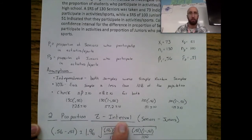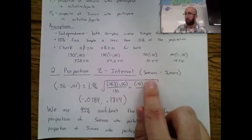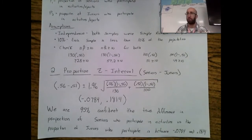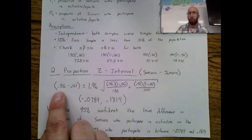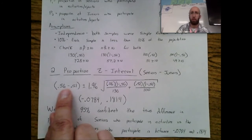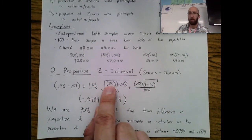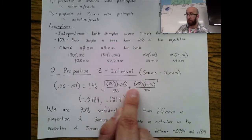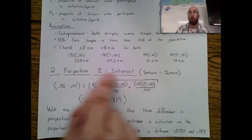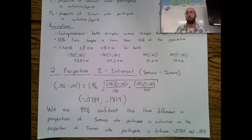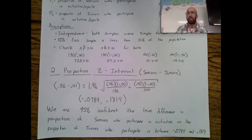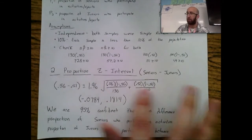I'm doing a two-proportion Z interval — the name step. I'm doing seniors minus juniors to estimate the difference in proportions. The formula is: (p-hat1 − p-hat2) ± z* × √(p-hat1·q-hat1/N1 + p-hat2·q-hat2/N2). I plugged in all the numbers. The z* critical value for 95% confidence is 1.96. I then used my calculator's two-proportions interval function to compute the result.